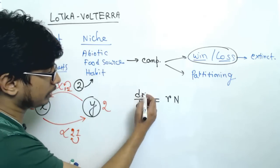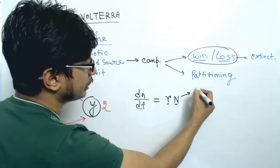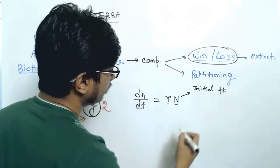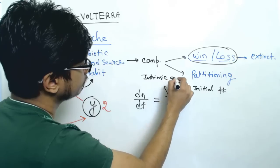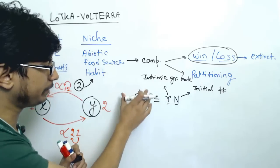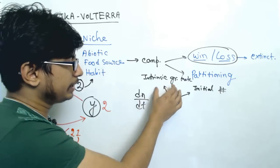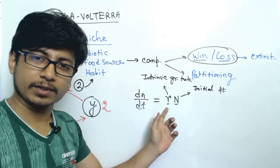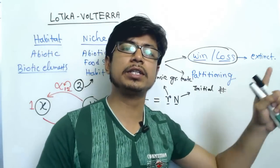The formula dN/dt = rN gives us the growth of a population over time, where r is the intrinsic growth rate — dependent on birth rate and death rate. So more birth rate and less death rate means the r value will increase. This is the formula for calculating rapid or exponential growth. That's a general formula for calculating population growth.